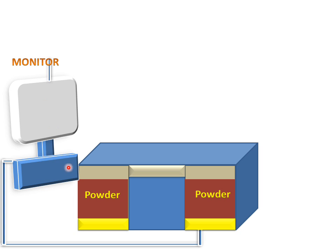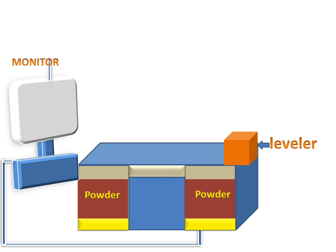In selective laser sintering, there will be a powder block on the left side and a powder block on the right side. This is the elevator for upward motion of the powder. And this is the platform for the downward motion for the prototype which we will make on this machine. There will be a leveler which will level the powder. When powder is spread on this sheet, the leveler will level the powder and make it a flat sheet.